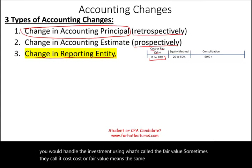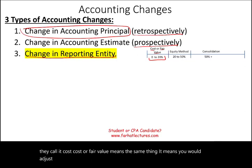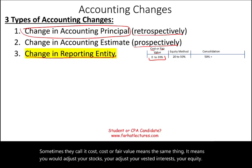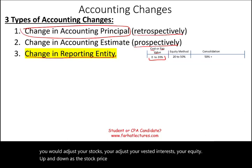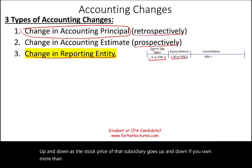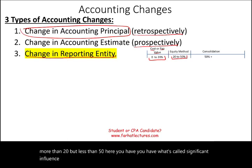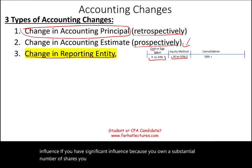It means you would adjust your equity interest up and down as the stock price of that subsidiary goes up and down. Now, if you own more than 20 but less than 50 percent, you have what's called significant influence. If you have significant influence because you own a substantial number of shares, you would have to use the equity method.